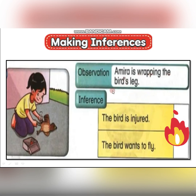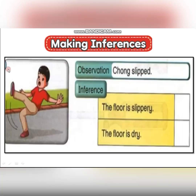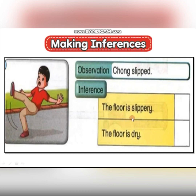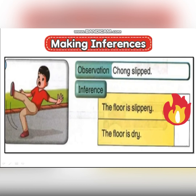Next, let's see another observation. The observation is: Chong slips. So why did this happen? The inference choices are: the floor is slippery, or the floor is dry. The answer is: the floor is slippery. This is the reason why Chong slipped.